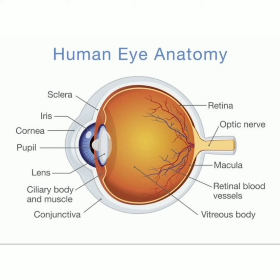Hello, I am Shartok Gash from class 10. Today I will talk about the human eye. The main parts of the human eye are the cornea, iris, pupil, aqueous humor, lens, vitreous humor, retina, and optic nerve.